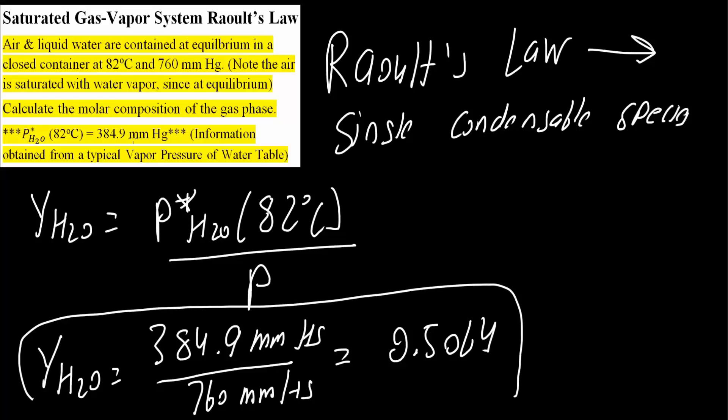Now we have air and liquid. So the air composition, the composition for dry air, would simply be 1 minus 0.5064, and we would get 0.4936.